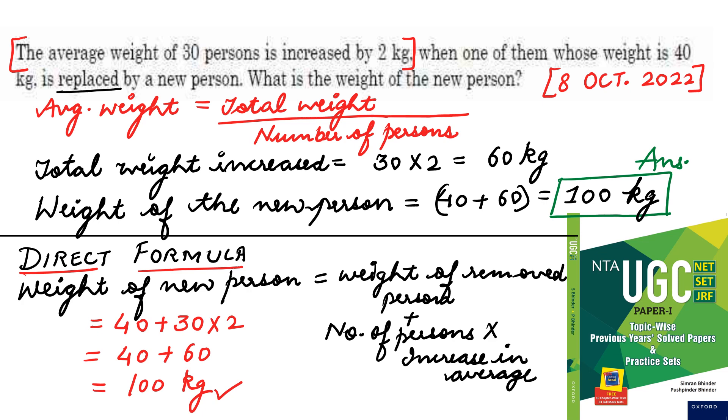Now this is another type of question under the topic averages. Again a latest previous year question from 8th October 2022 UGC net exam. Read the question carefully. These type of questions you have to prepare. The average weight of 30 persons is increased by 2 kg when one of them whose weight is 40 kg is replaced by the new person. What is the weight of the new person? Read the question carefully what they have asked. They have asked us to calculate weight of the new person.